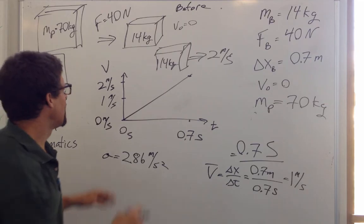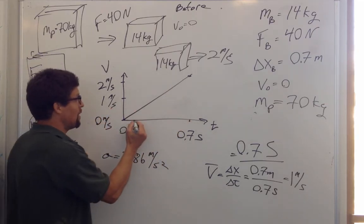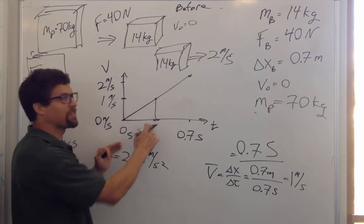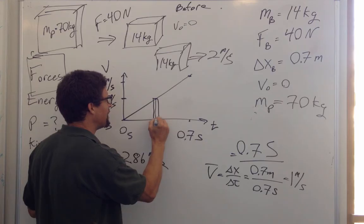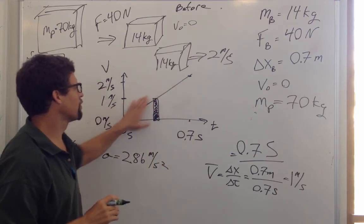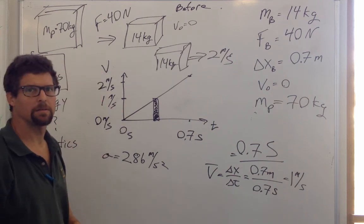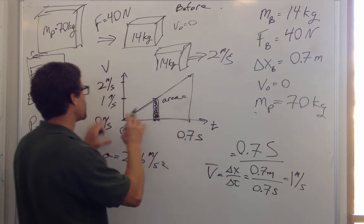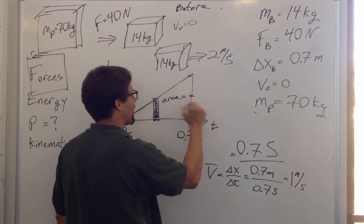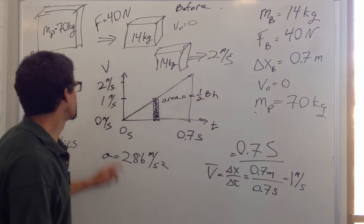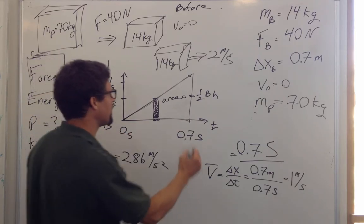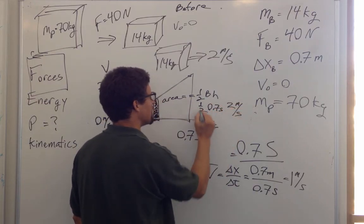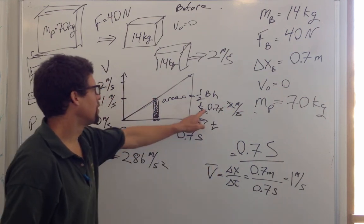The area under the v-t graph is the displacement. Since speed times a little bit of time equals delta-x, the integral of velocity is how far the object goes. This graph forms a triangle, so the area is one-half × base × height: one-half × 0.7 s × 2 m/s = 0.7 meters. That confirms our displacement.